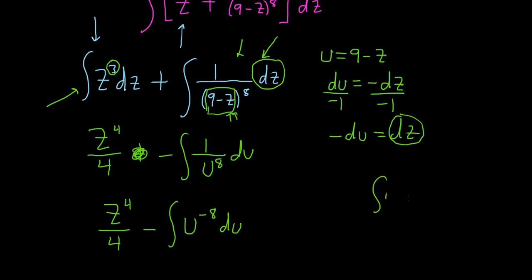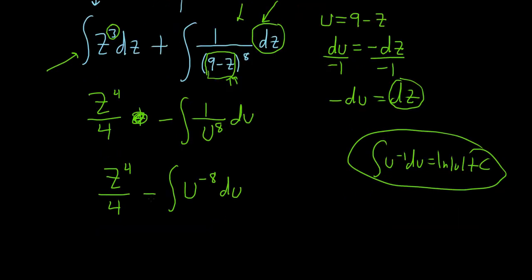The only exception is if it's like a negative 1. If it's negative 1, in this case here, this is the special case where you get the natural log. So keep that in mind. So otherwise, you can just add 1 and divide. So let's do that.